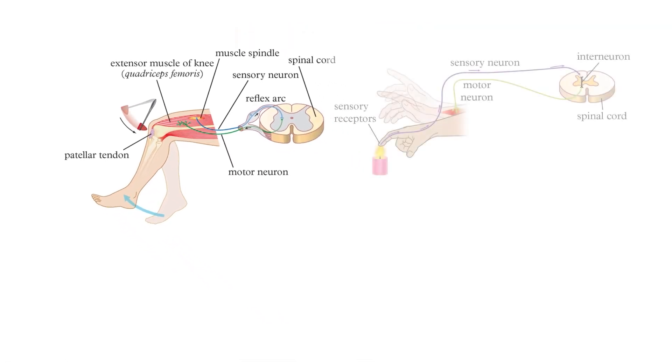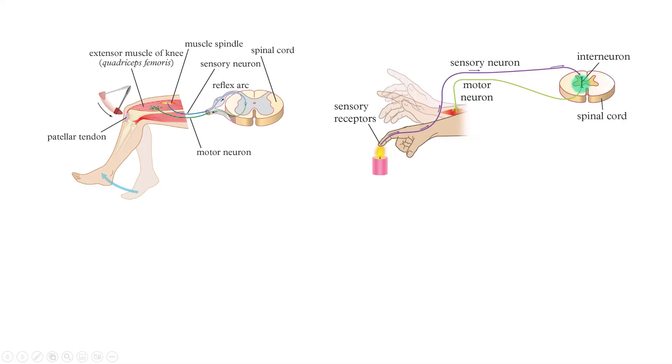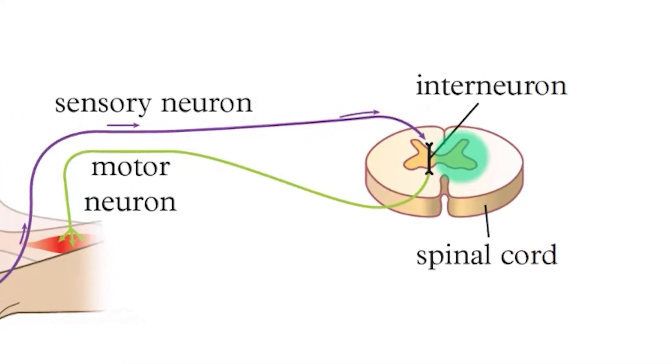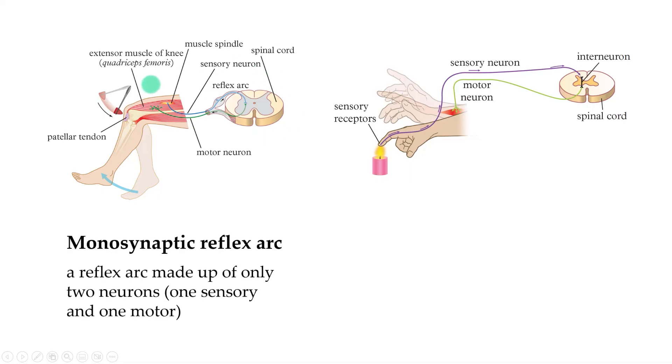Now there's one difference between these two spinal reflexes. Can you see what it is? It is the presence of this little guy right here, the interneuron. You see, the patellar reflex is an example of a monosynaptic arc because it only has one synapse or one junction between the two neurons.